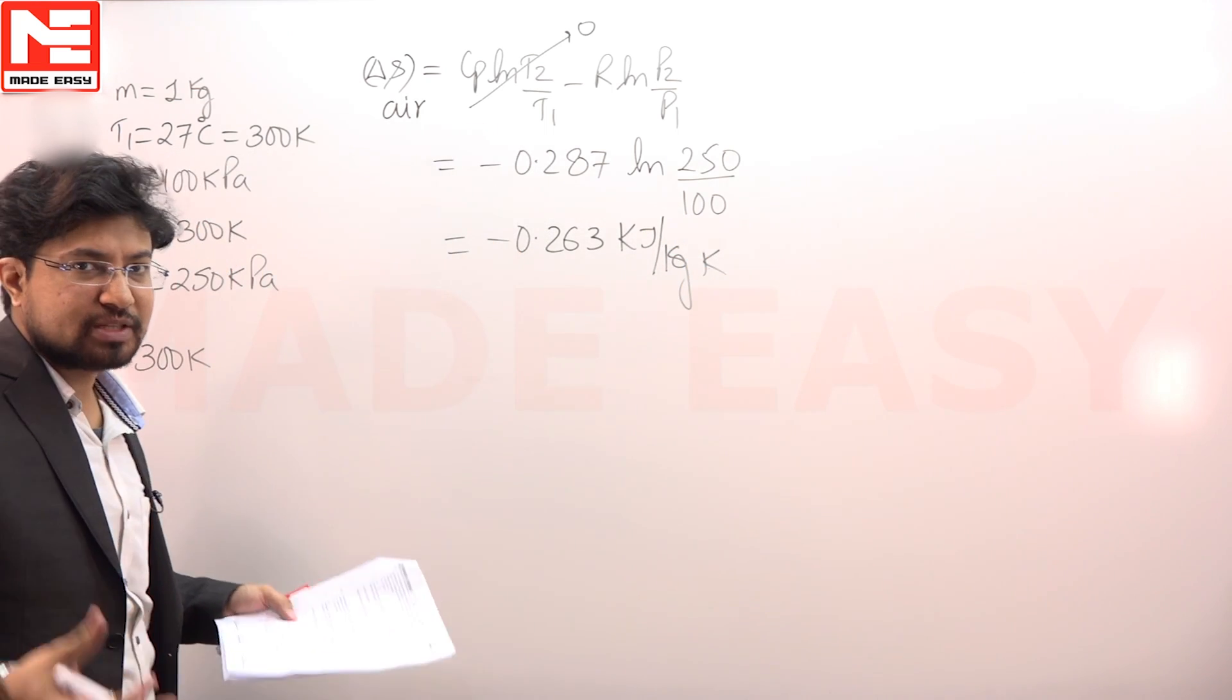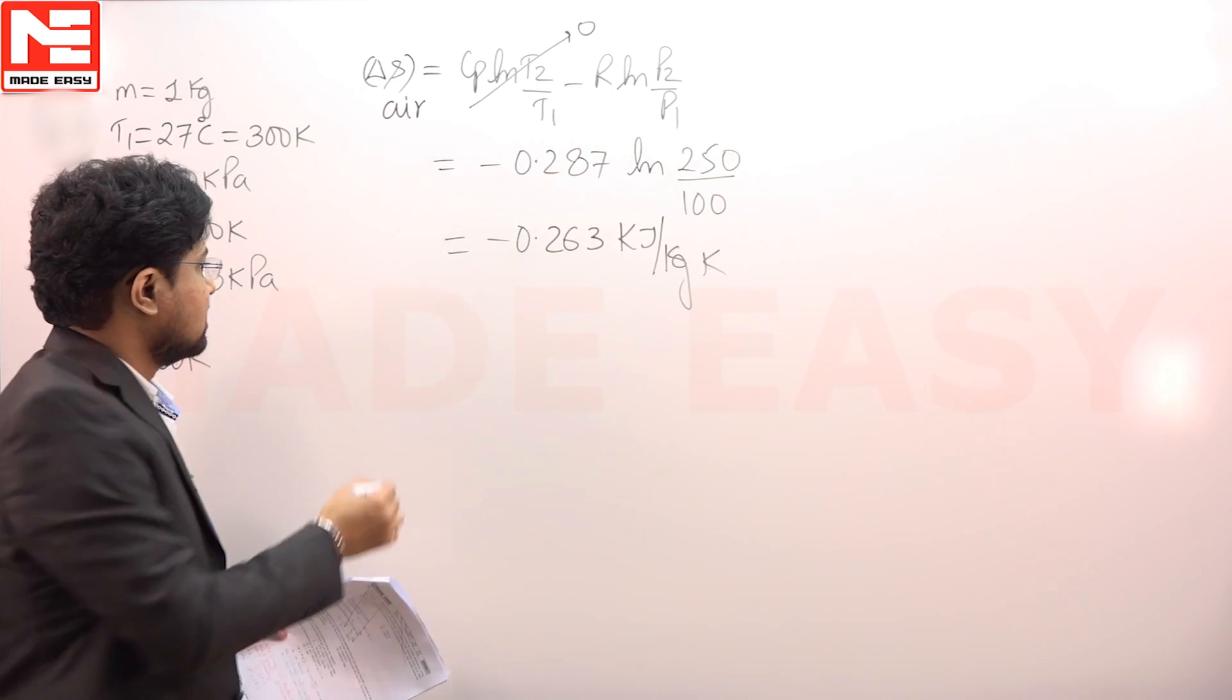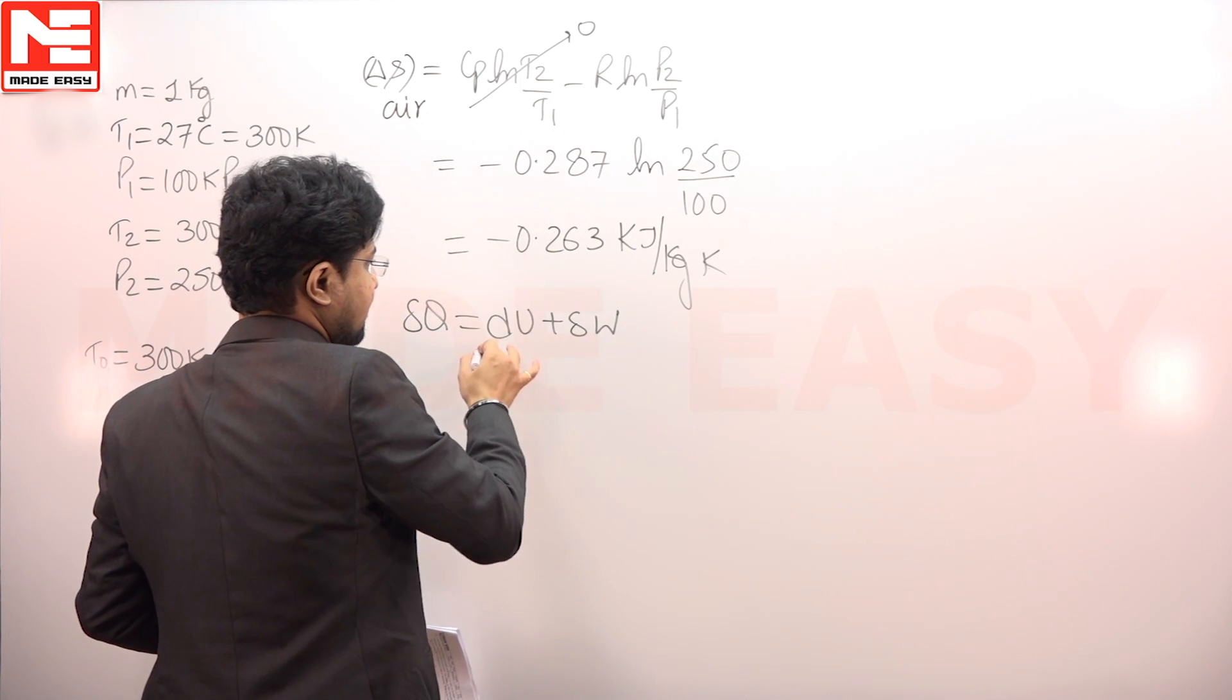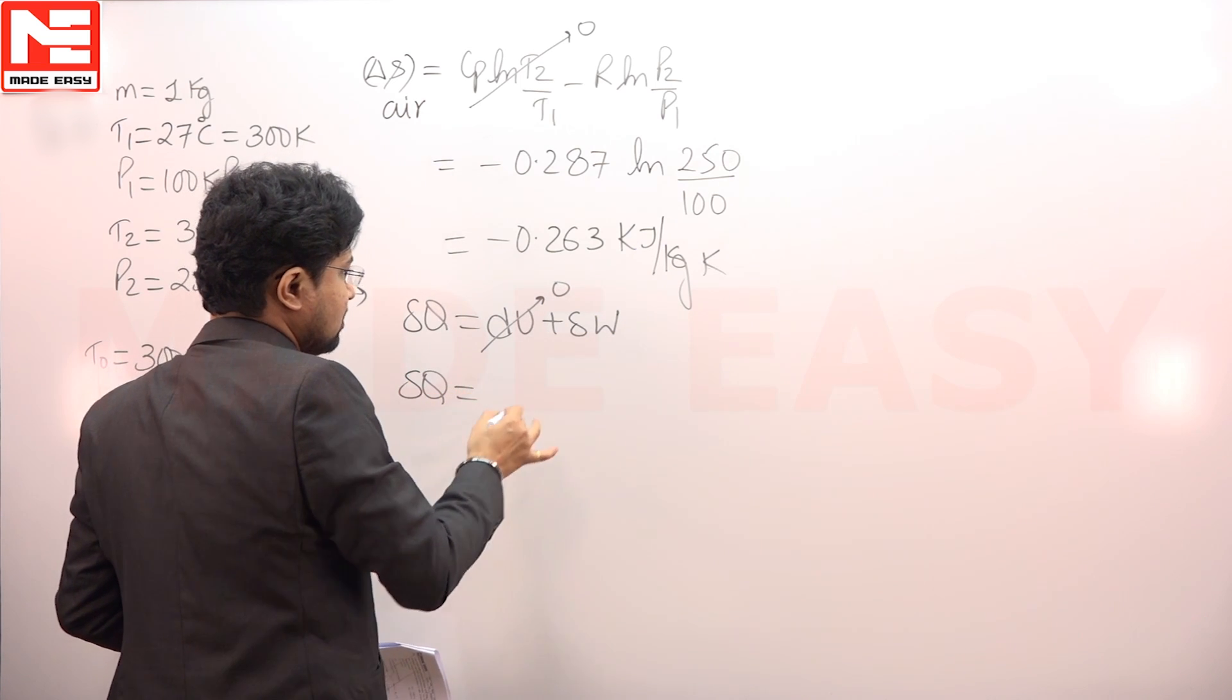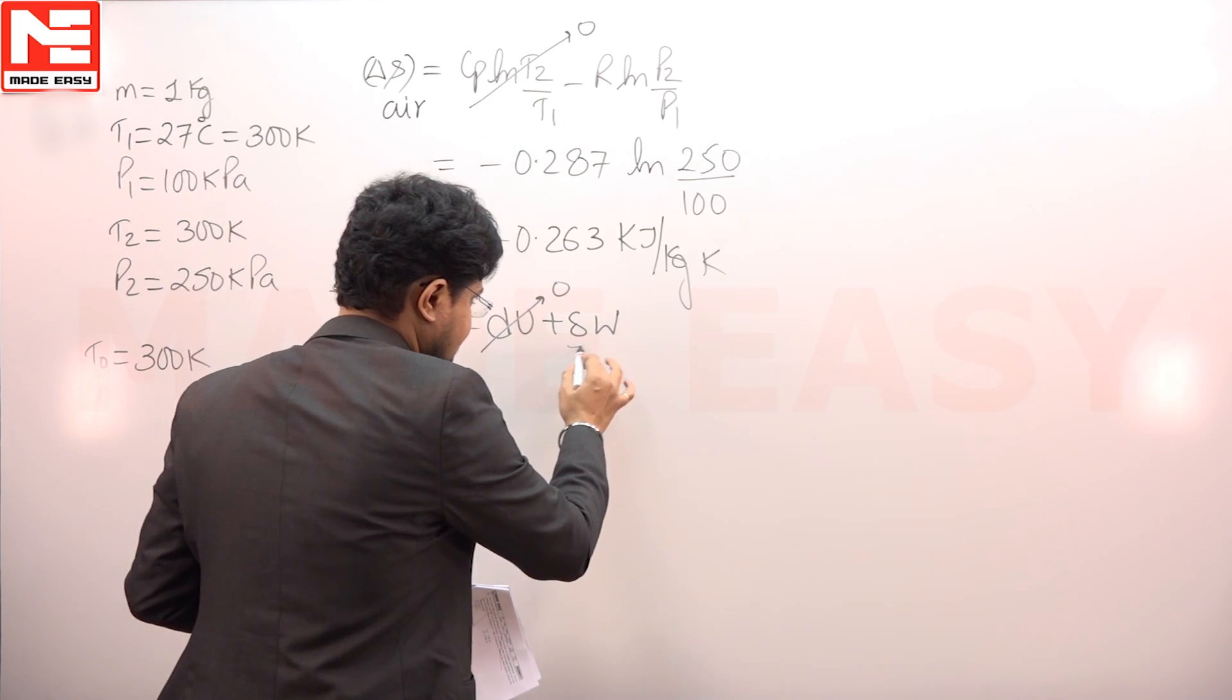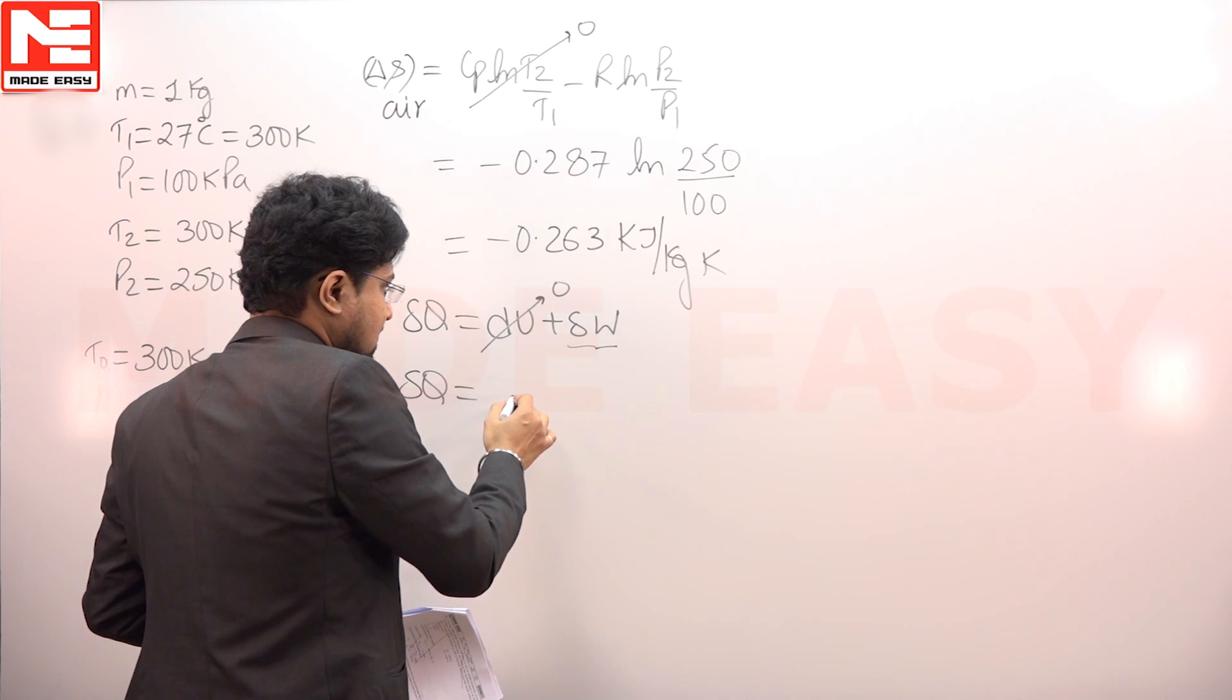If we want to find out the entropy change of the surrounding, we have to find out how much heat transfer has taken place. For air we can use the first law of thermodynamics: del Q equals to dU plus del W. The internal energy change of the air is 0. Heat interaction del Q will be equal to the work done.